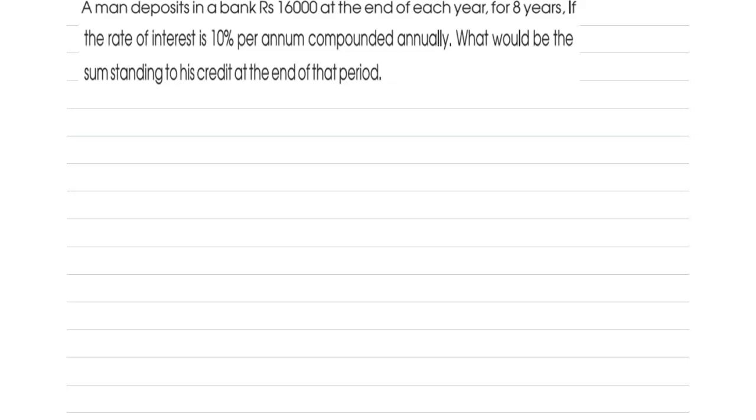Here we are going to see the question: A man deposits in a bank rupees 16,000 at the end of each year for 8 years. If the rate of interest is 10% per annum compounded annually, what would be the sum standing to his credit at the end of that period?